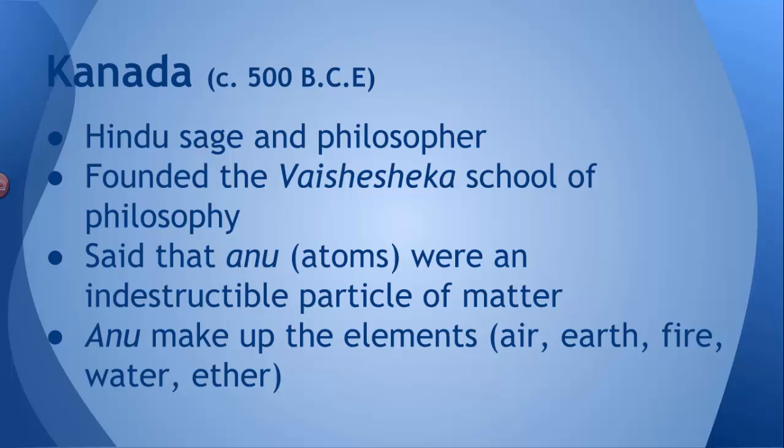Ether was a special element that was only possessed or only composed humans, because we were the highest order living thing. But everything was composed of air, earth, fire, and water, and those four elements were made up of these tiny little particles called anu.